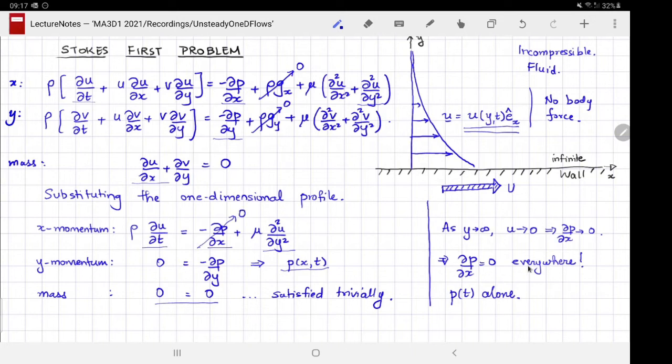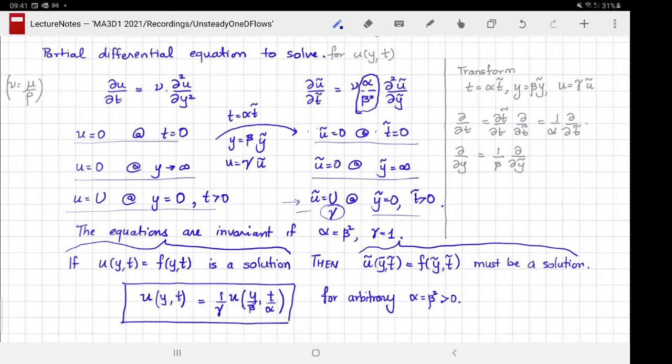At this point, I want you to pause and think very carefully about what we have shown and how we can use it. Specifically, if u(y,t) takes some functional form f(y,t), and this functional form satisfies the equation, then ũ(ỹ,t̃) is satisfied by the same function f but evaluated at ỹ, t̃. If the function form is the same but the velocities are related by this transformation u = γũ, then that leads to this relation between the solution and scaled version of this solution.